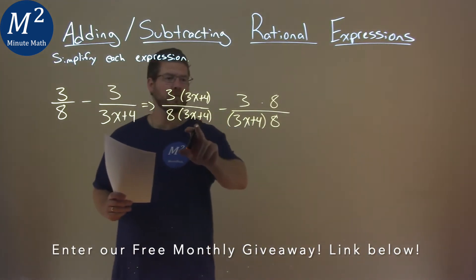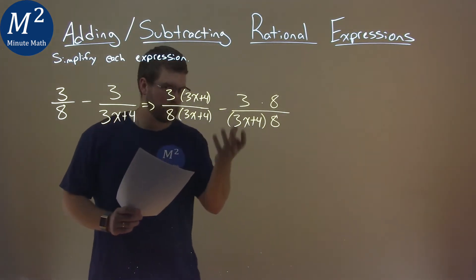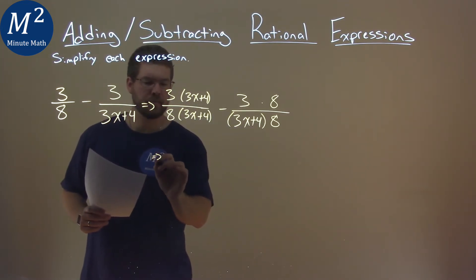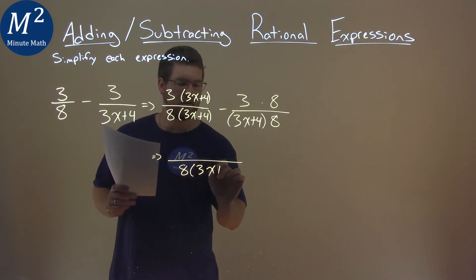Notice now, by putting 8 over 8, it's just like a 1, and 3x plus 4 over itself is like a 1, but we now have the same denominator. That denominator being the 8 times 3x plus 4.